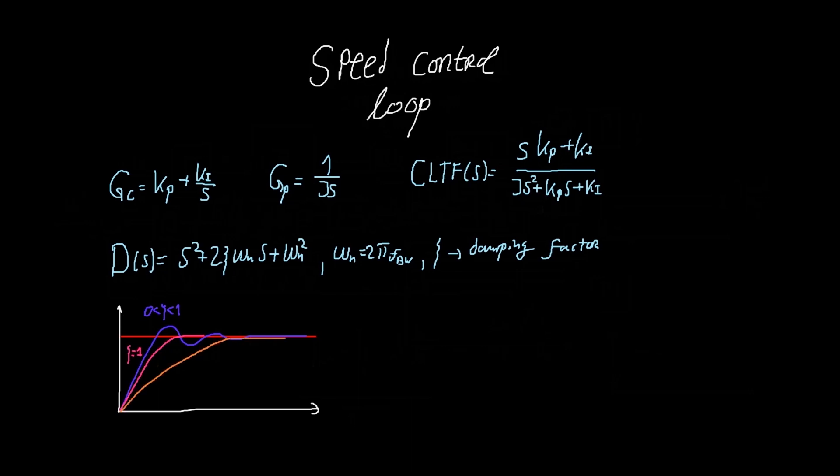And now by equating the coefficients of the closed loop denominator and denominator equation, we can get our controller gains. Now let's see how this works in Simulink.